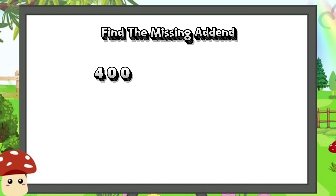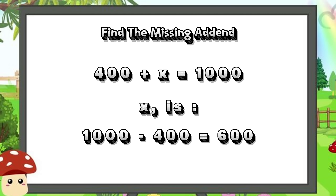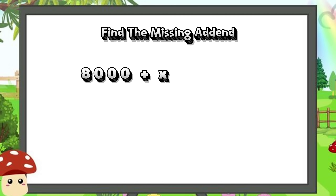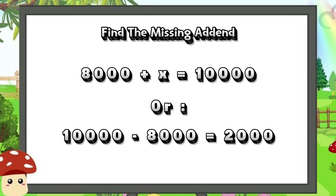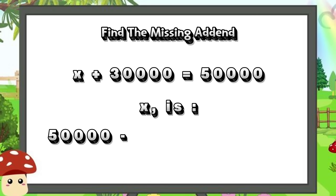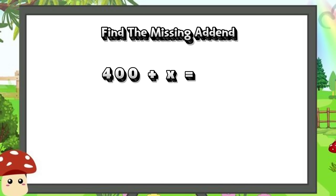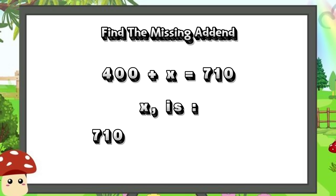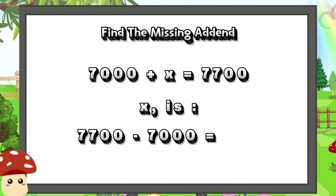Find the missing addend. 400 plus x is equals to 1,000; x is 1,000 minus 400, equals 600. 8,000 plus x is equals to 10,000; 10,000 minus 8,000 equals 2,000. X plus 30,000 is equals to 50,000; x is 50,000 minus 30,000, equals 20,000. 400 plus x is equals to 710; x is 710 minus 400, equals 310. 7,000 plus x is equals to 7,700; x is 7,700 minus 7,000, equals 700.